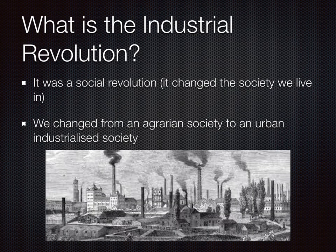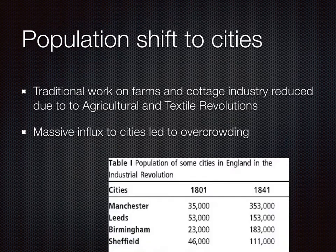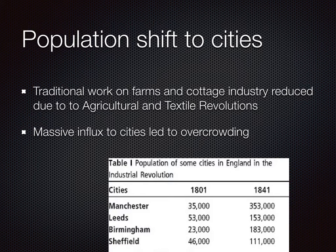We already talked about how the Industrial Revolution was a social revolution that changed society — where we moved from an agrarian or agriculturally based society to a more urban industrialized society. Today we will look at some of the consequences of that. There is no other event in modern European history that has had bigger consequences. Millions of people moved from the countryside to the cities looking for work, and traditional work on farms and in cottage industries were erased with the agricultural and textile revolutions.